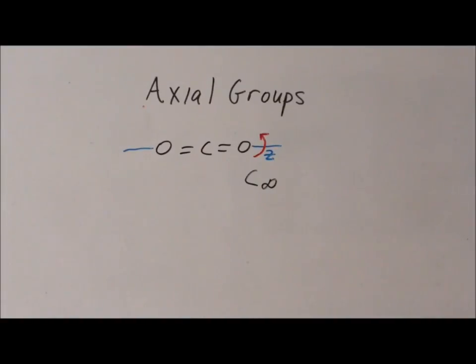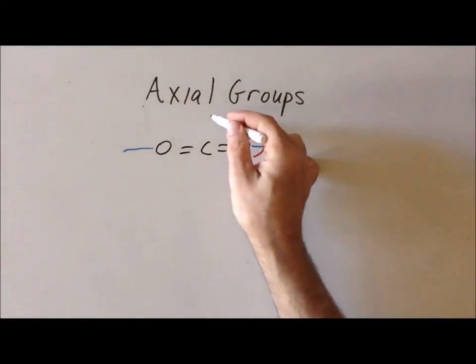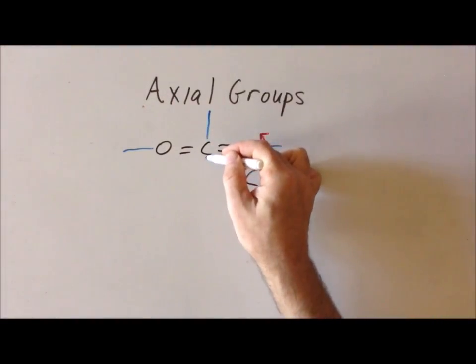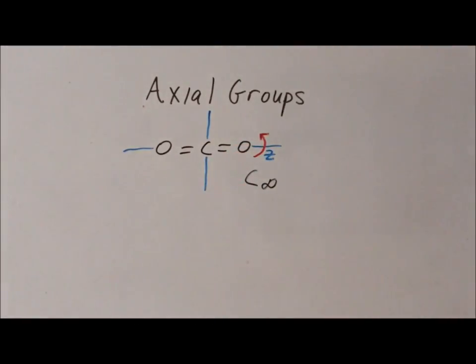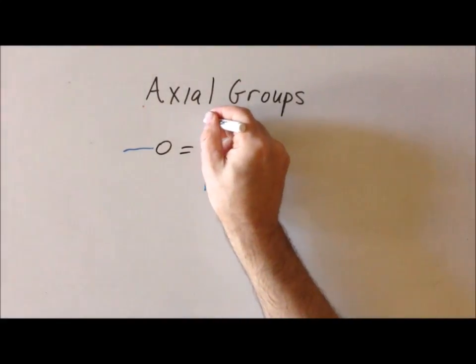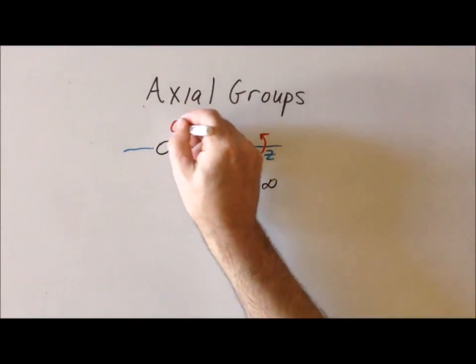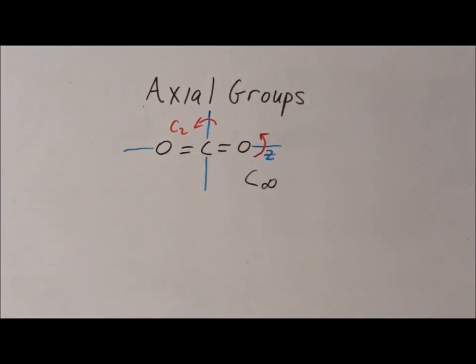But again, we want to check, as we always do, once we've found the high-order rotation axis for a molecule, to see is there a C2 that is perpendicular to it. So in this case, we'd be looking for a C2 that would go through the central carbon atom. And if there were such a C2, go along here. So we're looking for a C2 about that particular axis. In this particular case, we can draw one and call this the x-axis if we like.